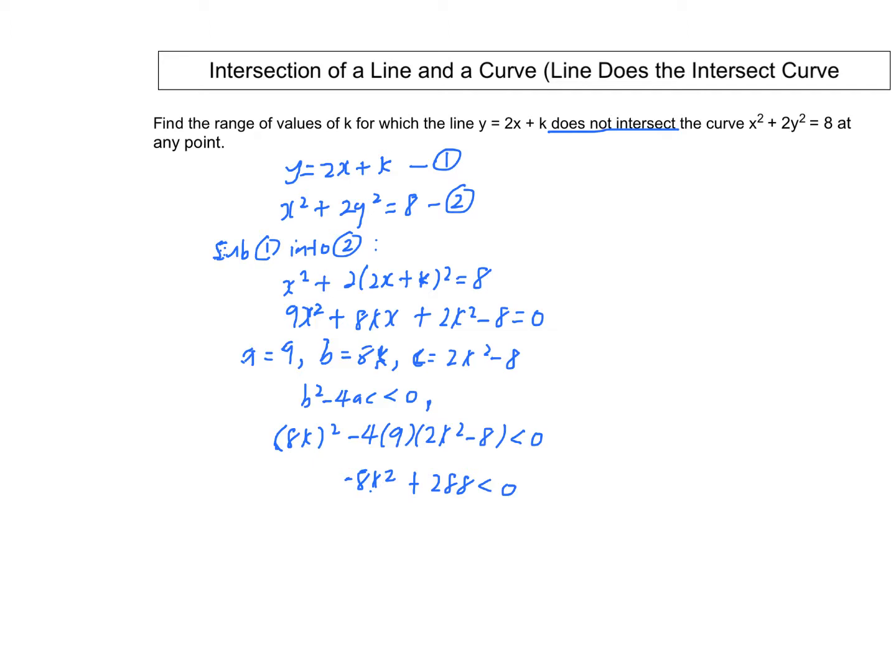Multiplying by negative 1 on both sides, we get 8k² - 288 > 0. Factoring out 8, we have k² - 36 > 0.